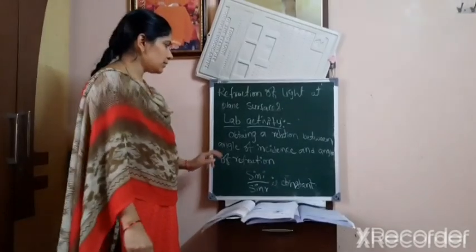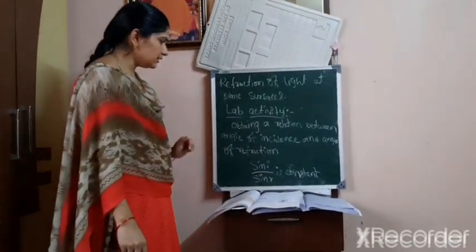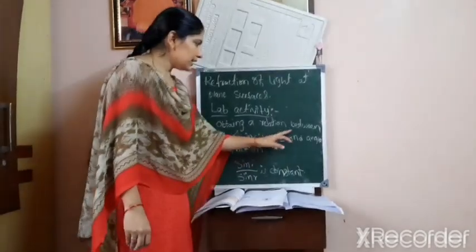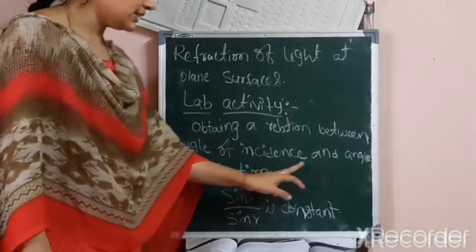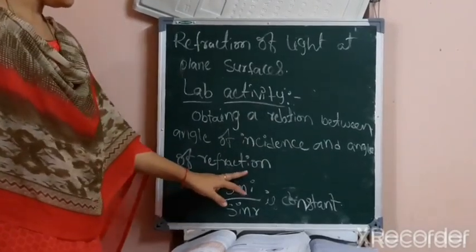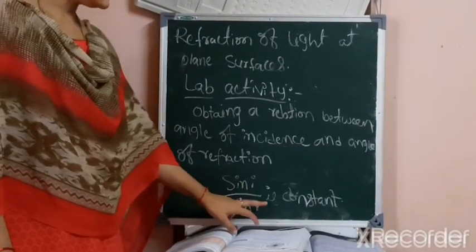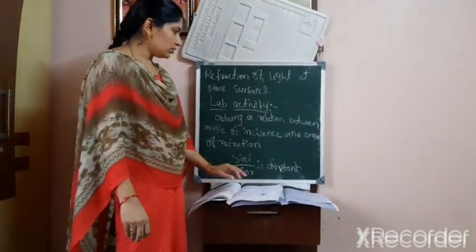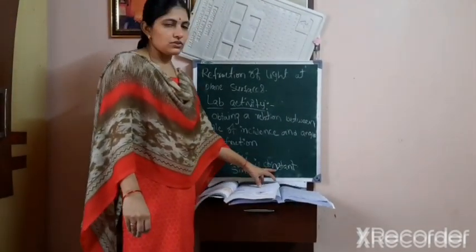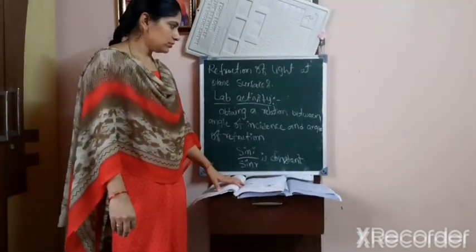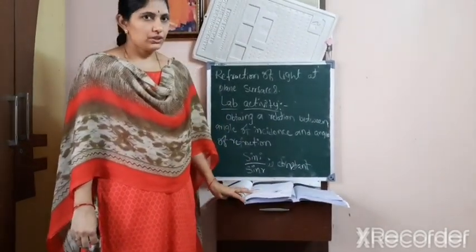Now we discuss the lab activity. What is the lab activity in this lesson? We are learning the relation between angle of incidence and angle of refraction — that means, sine A by sine R is constant. We prove that sine A by sine R is constant. This lab activity is very important.